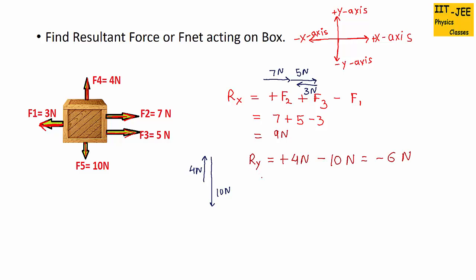This shows that resultant vertical force is towards down because we got minus 6N. So it would be like this.